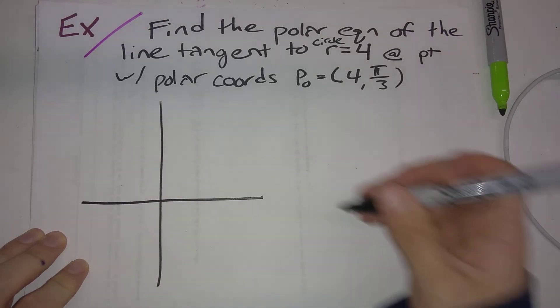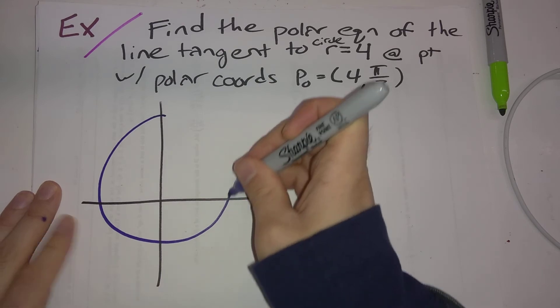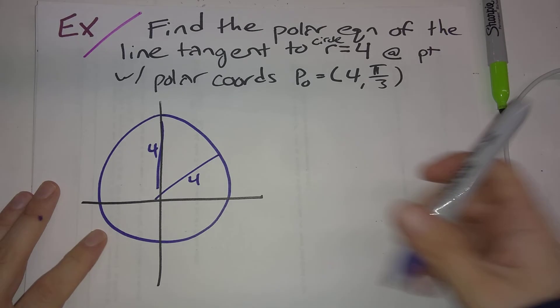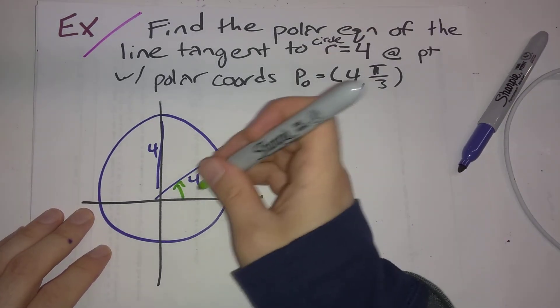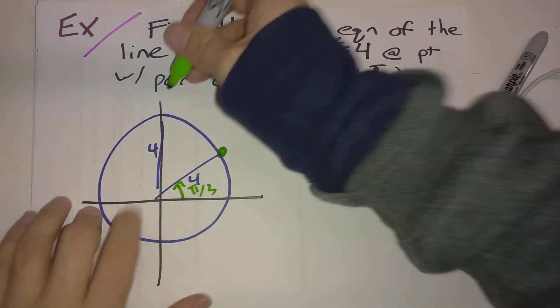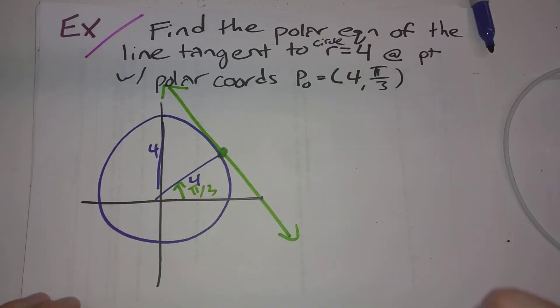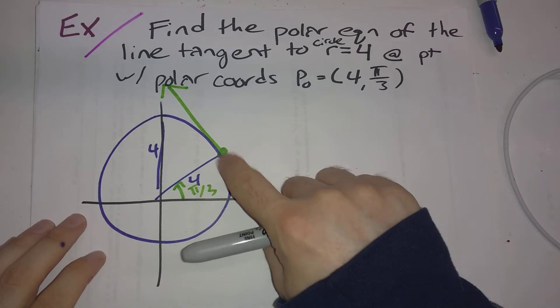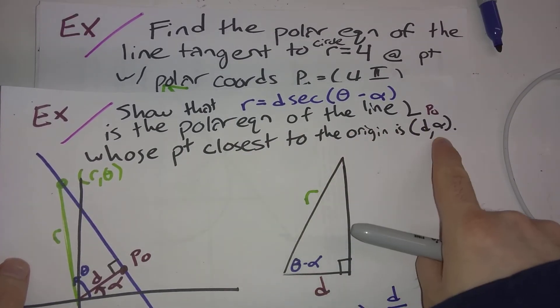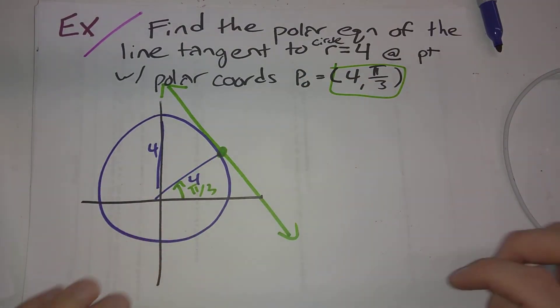So picture, here is our circle of radius 4. And let's say right here is theta is pi over 3. So this is the line that we're trying to find an equation for. But this line has exactly this property here. Polar equation of a line L whose point closest to the origin is D alpha. This is the point on the line that's closest to the origin.